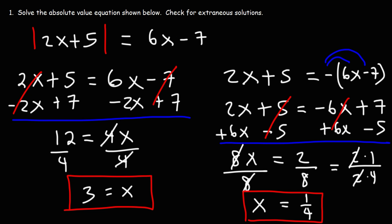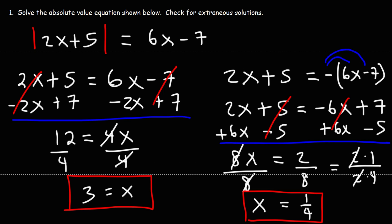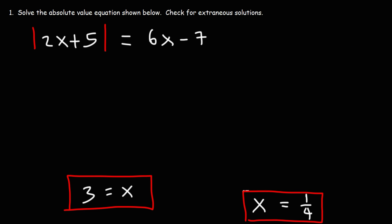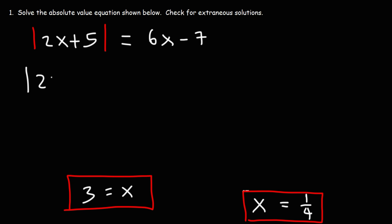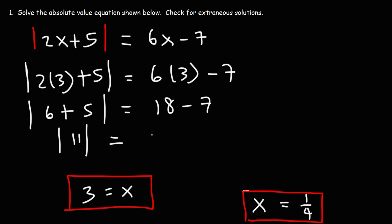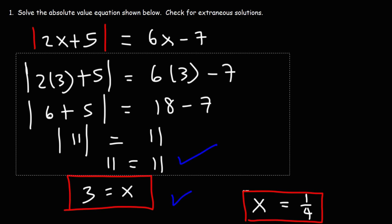These are the two potential solutions. Let's check them in the original equation. Plugging in x equals 3: the absolute value of 2 times 3 plus 5 equals 6 times 3 minus 7. That gives the absolute value of 11 equals 11, which is true. So x equals 3 is a valid solution.